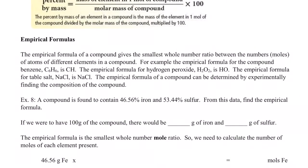The next thing I want to do is talk about empirical formulas. We actually did a lab on this recently — finding the empirical formula of magnesium oxide. An empirical formula gives the smallest whole number ratio between the number of atoms of different elements in a compound. For example, benzene has molecular formula C₆H₆, but the empirical formula is CH. Hydrogen peroxide has molecular formula H₂O₂, but its empirical formula is HO, the lowest whole number ratio of 1 to 1.